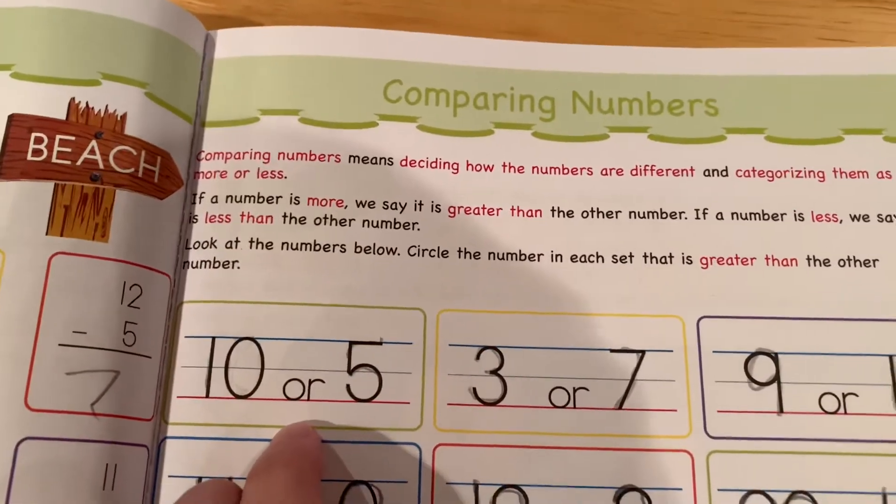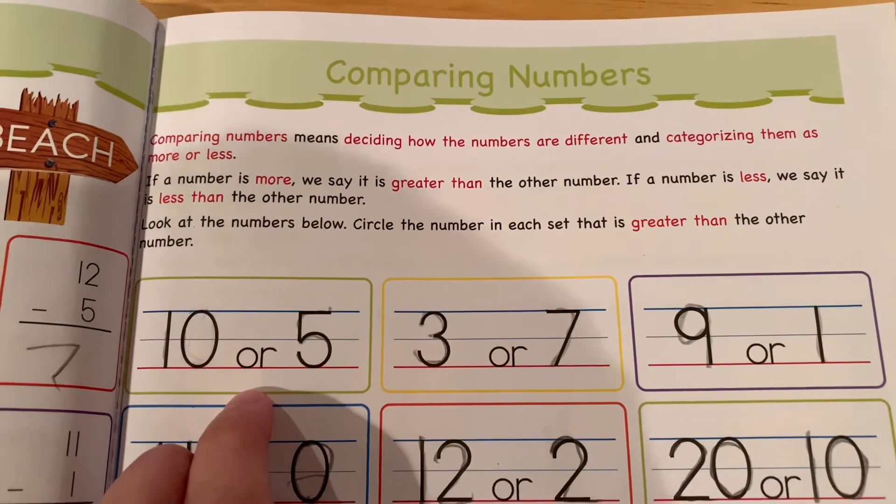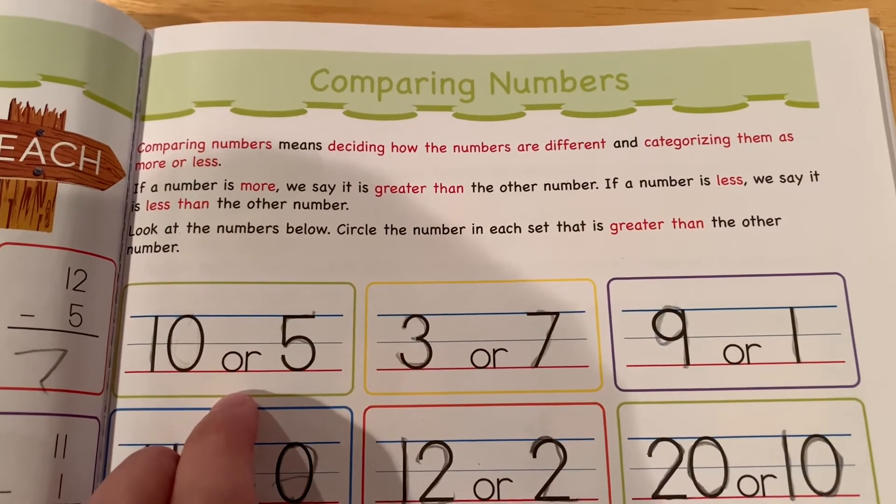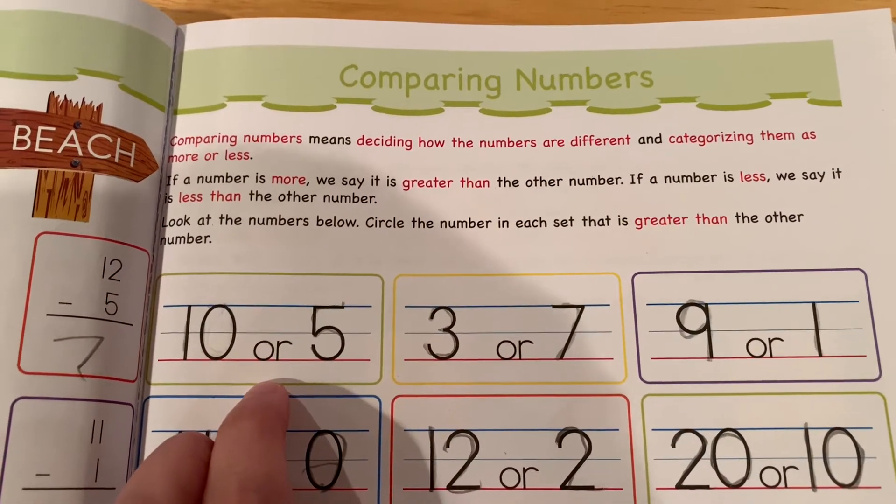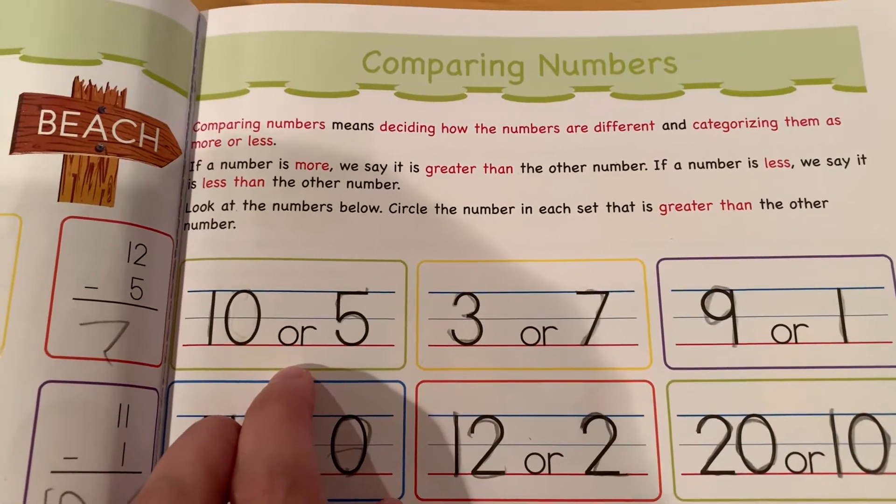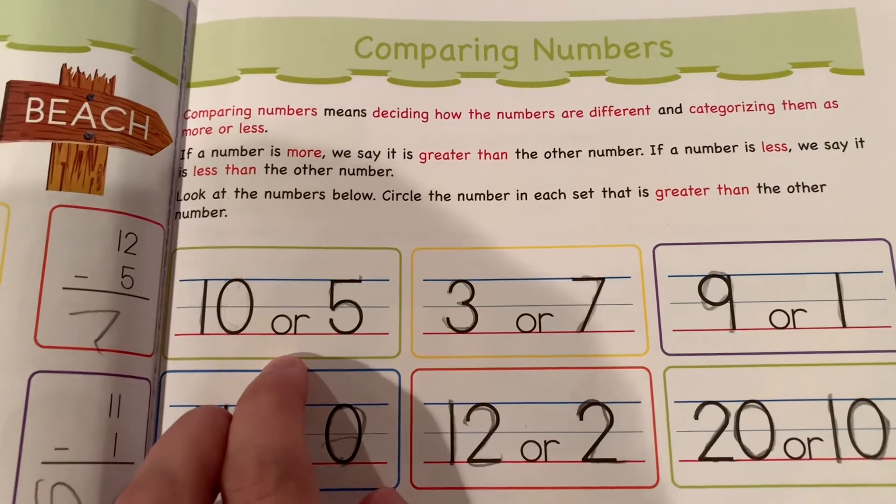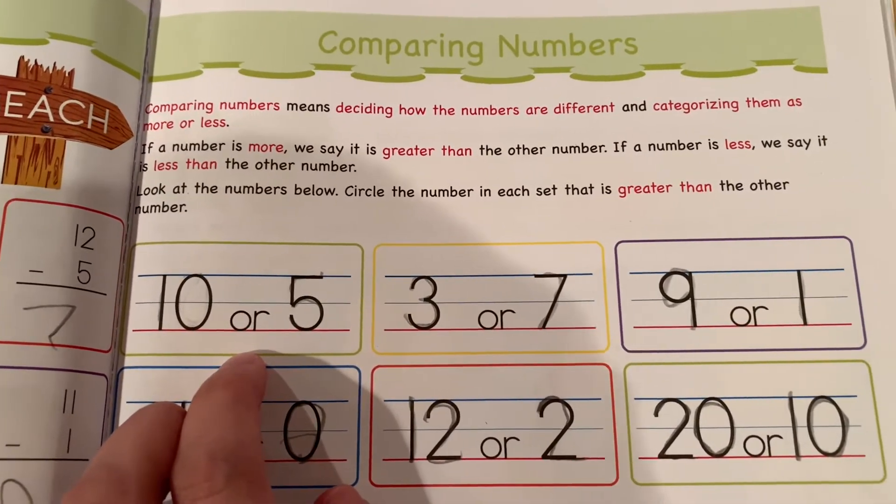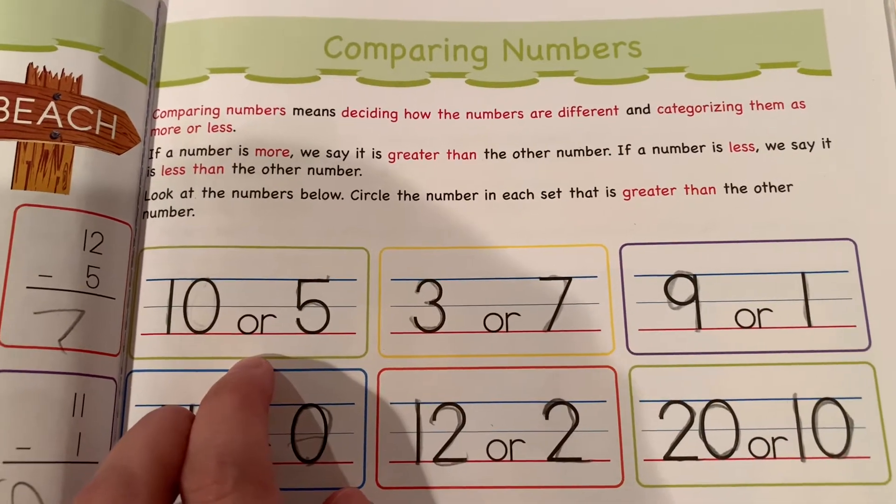Comparing numbers means deciding how the numbers are different and categorizing them as more or less. If a number is more, we say it is greater than the other number. If a number is less, we say it is less than the other number.